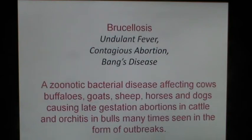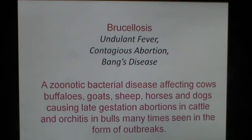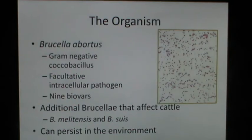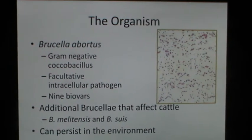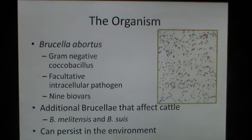Brucellosis, also known as undulant fever and also known as contagious abortion or Bang's disease, is a zoonotic bacterial disease affecting cows, buffalo, goats, sheep, horses and dogs, causing late gestation abortions in cattle and orchitis in bulls. Many times it is seen in the form of outbreaks. The organism Brucella abortus is an intracellular gram-negative coccobacillus. It is a facultative intracellular pathogen and has 9 biovars. Additional Brucella species affecting cattle besides Brucella abortus include Brucella melitensis and Brucella suis.